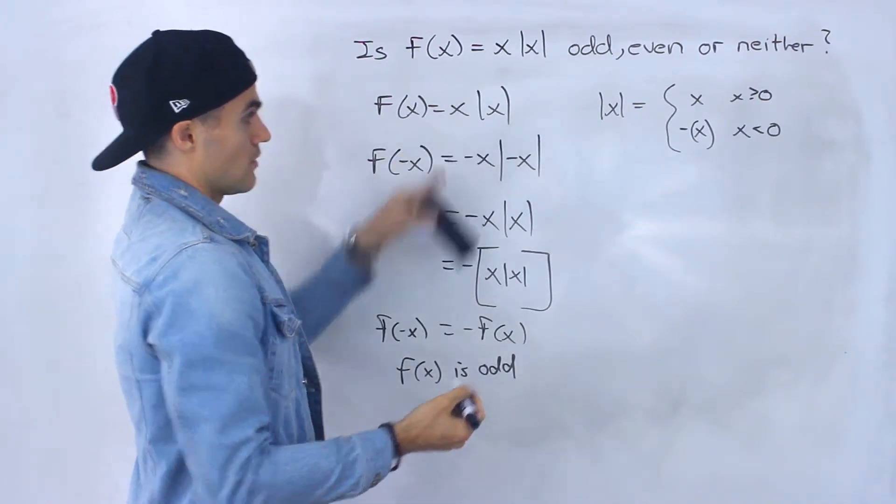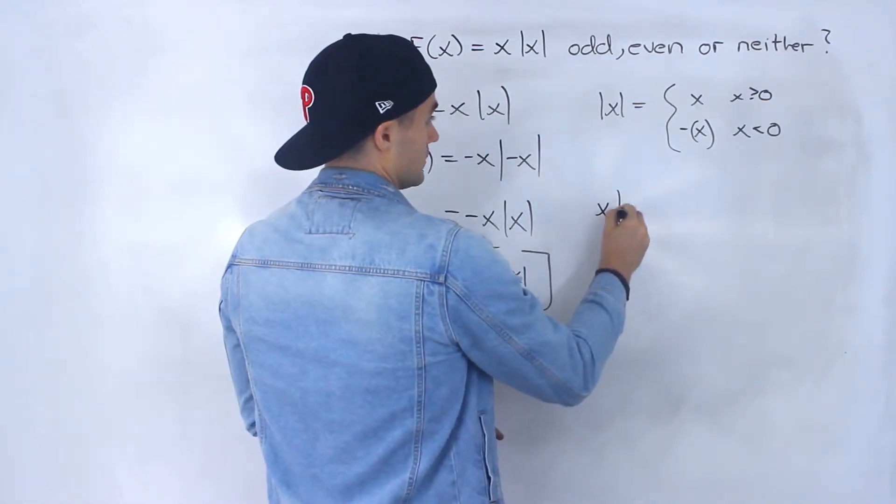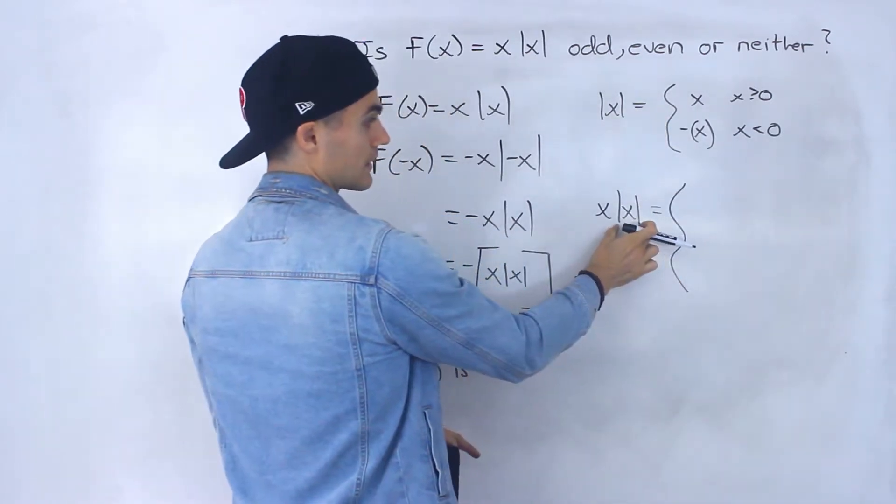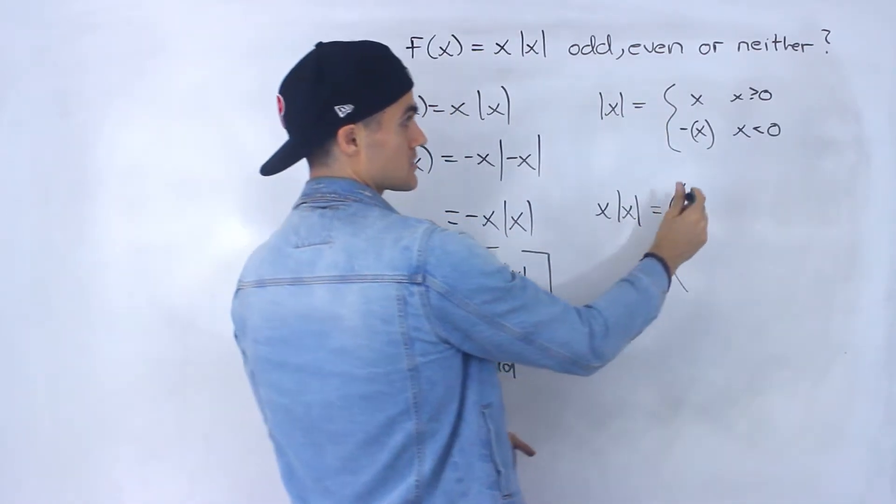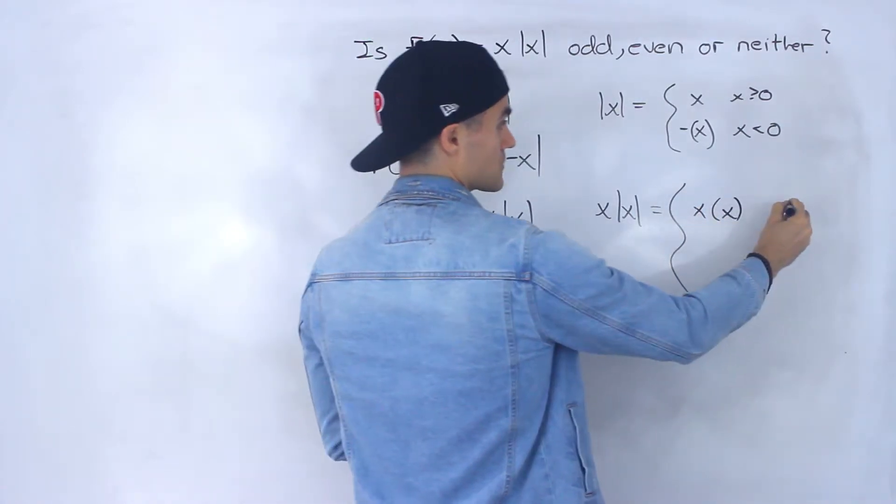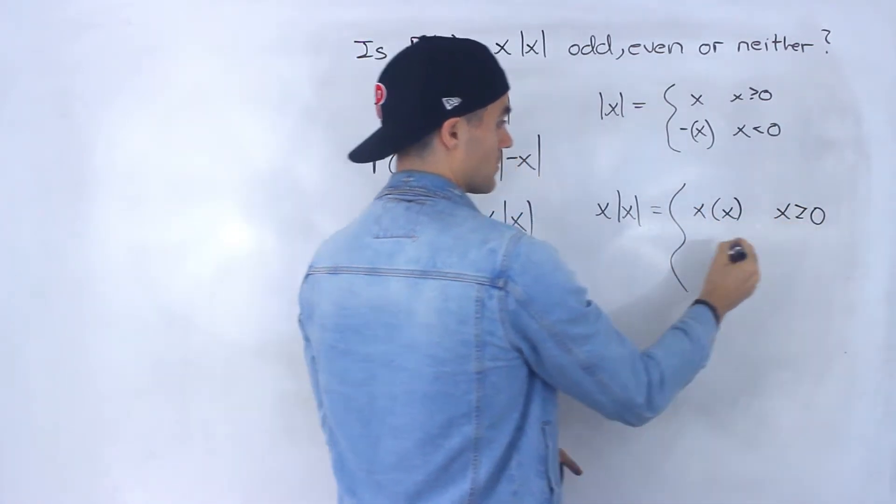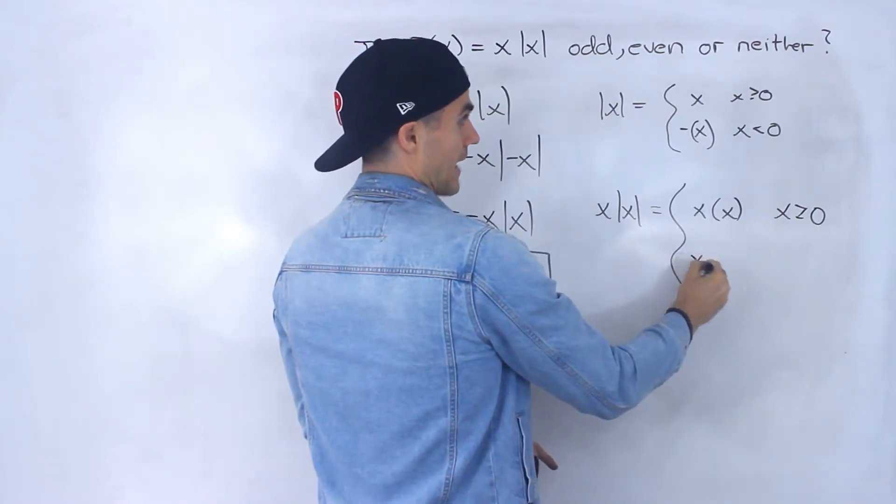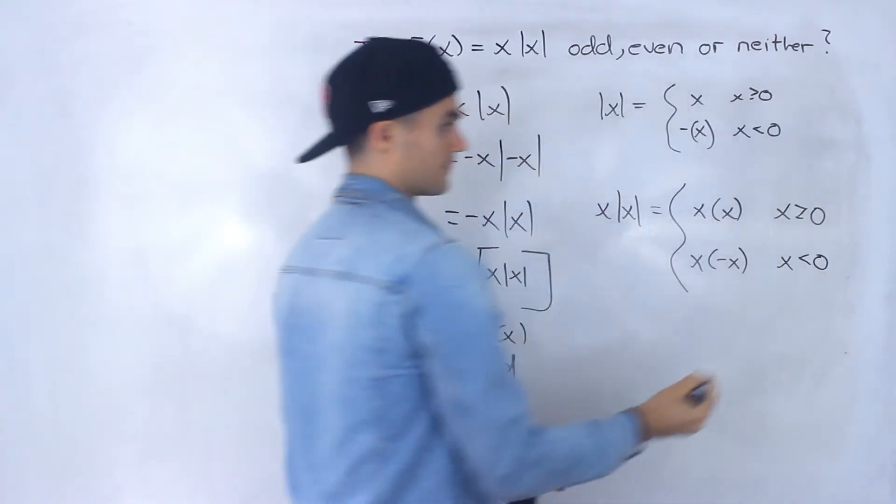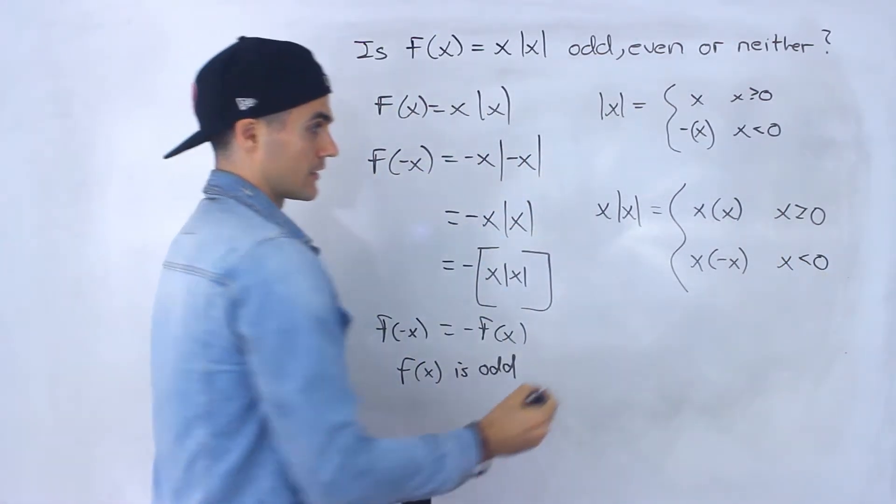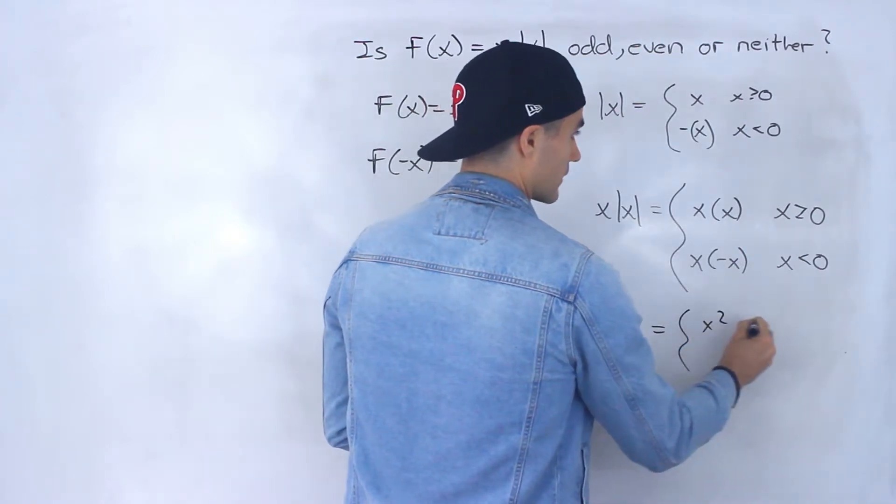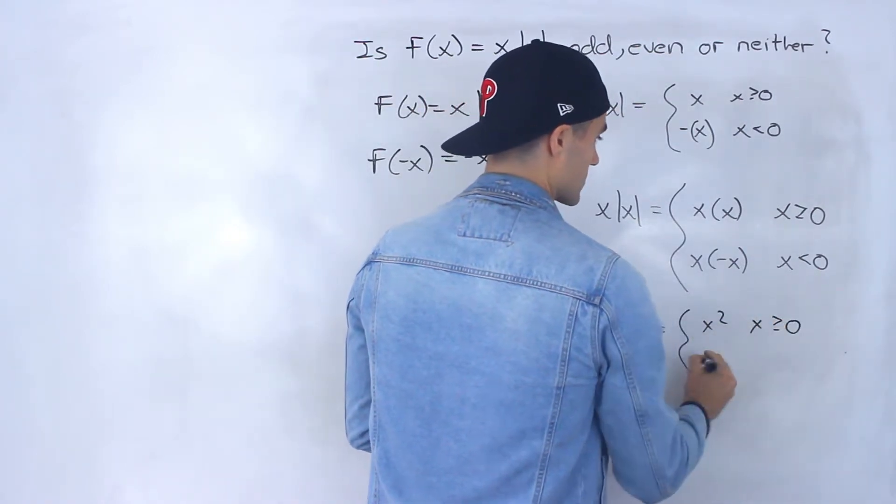So that means that this function, using this property here, plugging it in for this absolute value x, this would be x times positive x when x is greater than or equal to 0, and then x times negative x when x is less than 0. Like that. And so this would end up being x squared when x is greater than or equal to 0.